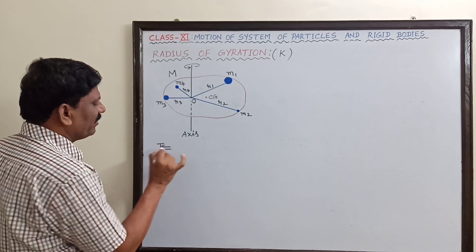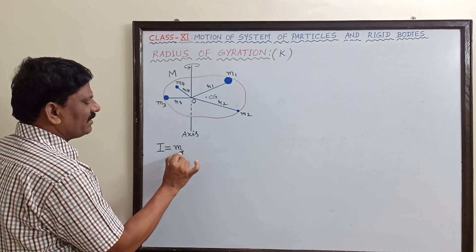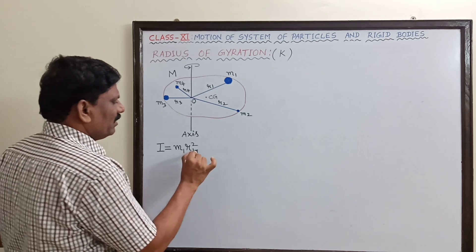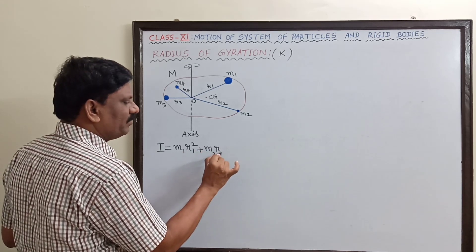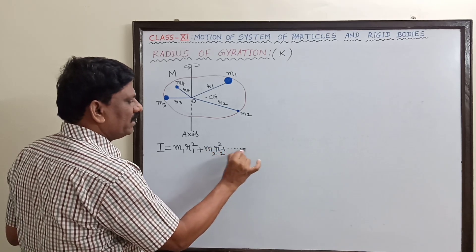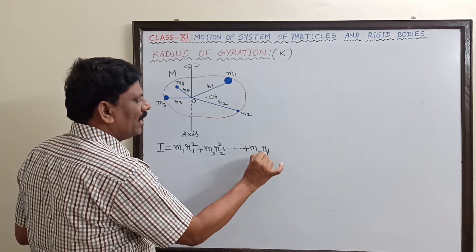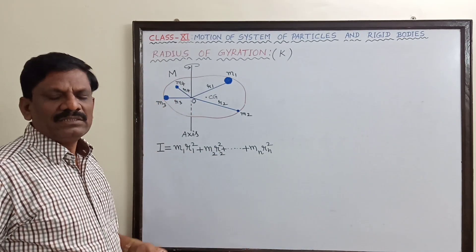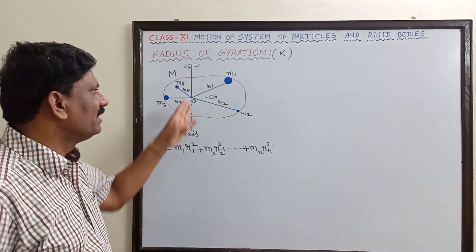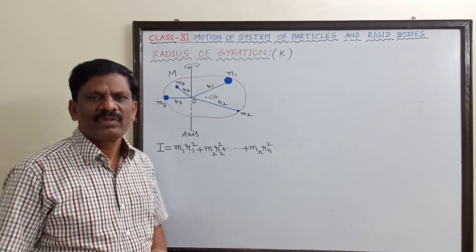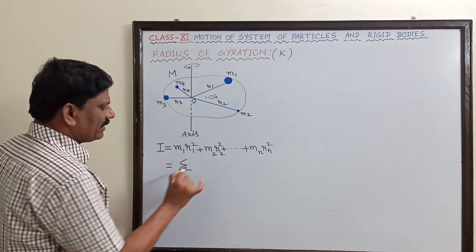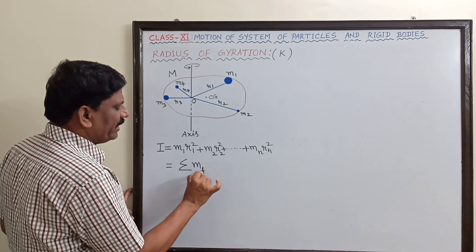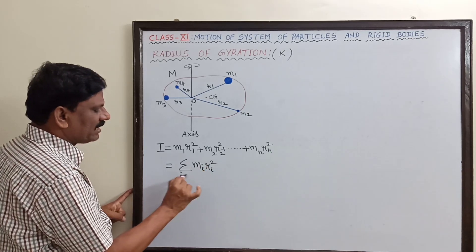The expression for the moment of inertia of the rigid body is: mass of the first particle into r1 square, the second particle's moment of inertia is m2 r2 square, and the last nth particle is mn rn square. If you add the moment of inertia of each and every particle, that sum will be equal to the net moment of inertia of the rigid body. This can be written as sigma — summation of n terms — which is Σmᵢrᵢ².